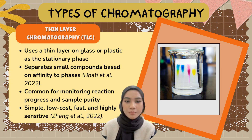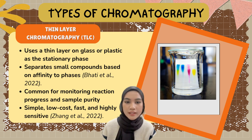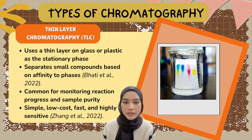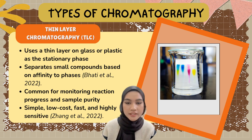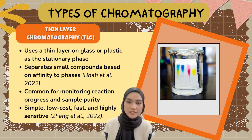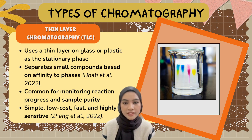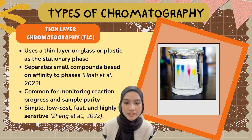The first type is thin layer chromatography, TLC. TLC uses a thin layer on glass or plastic as a stationary phase. It separates small compounds depending on how much they are attracted to either the stationary or mobile phase. This method is commonly used to monitor the progress of a chemical reaction or to check the purity of a sample. It's simple, low-cost, fast, and very sensitive, which makes it a popular choice in many labs.